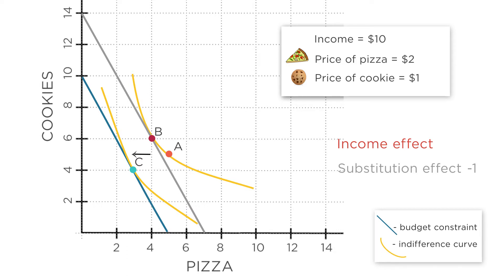From point B to point C, you drop from four slices of pizza to three slices of pizza. So the total effect of the price change is the sum of the substitution effect and income effect. One plus one equals two.